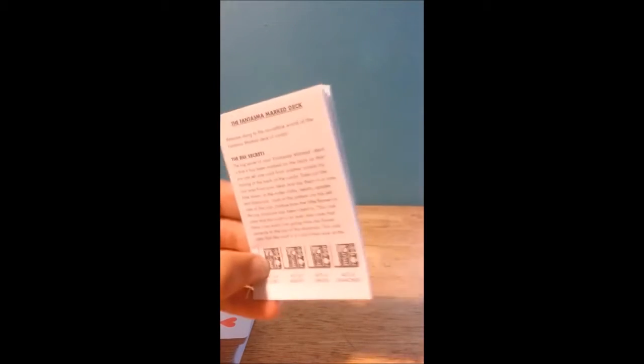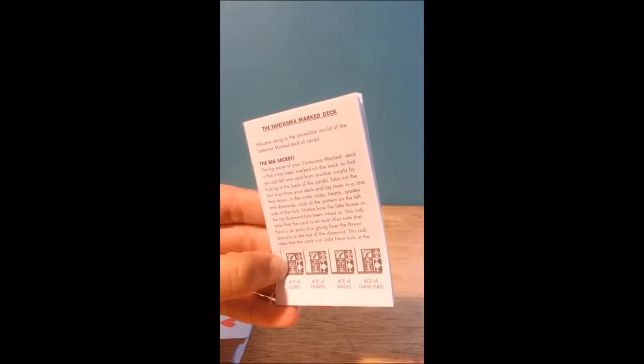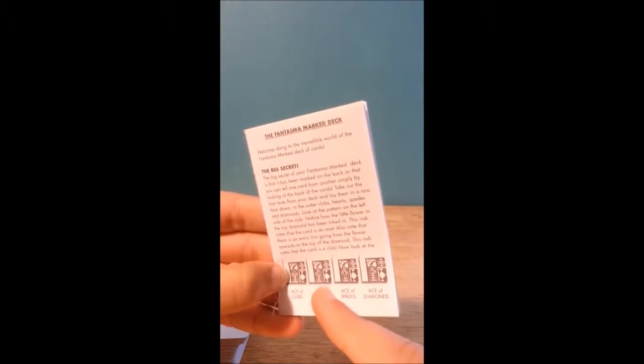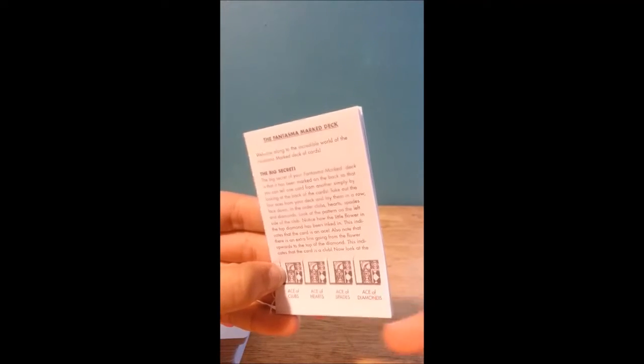If you look at these instructions, you can see them. If it's up, it's an ace of clubs. Ace of hearts. Bottom, ace of spades. And left, ace of diamonds.